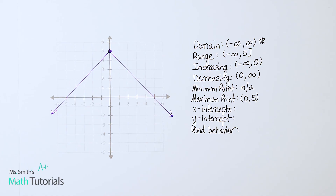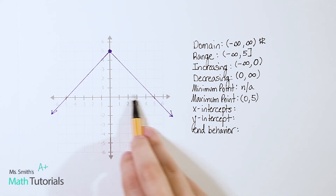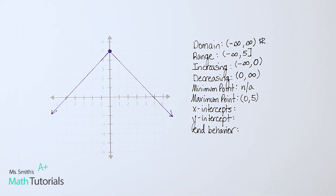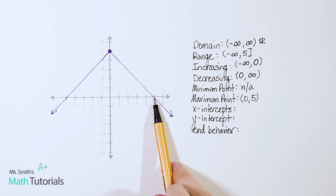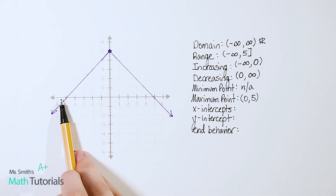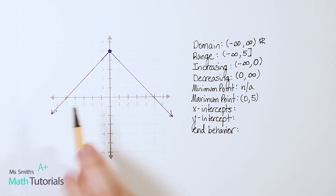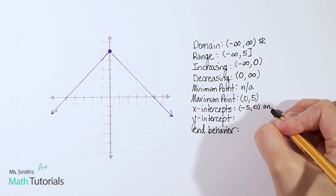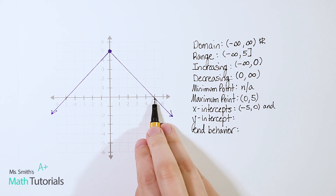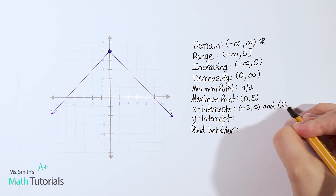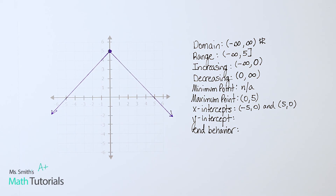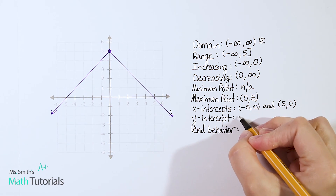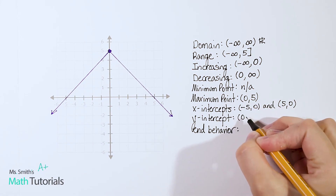For x-intercepts, we have two. One right here, approximately at negative five, so that's (-5, 0). And one over here at positive five, so (5, 0). I hand drew this, so give me a little grace. For our y-intercept we just have the one right up here, and that point is (0, 5).